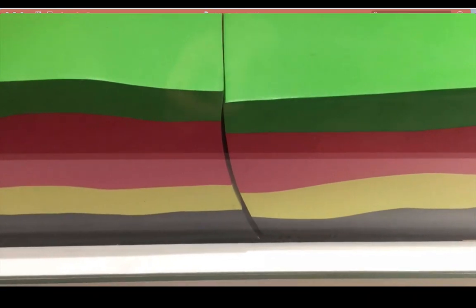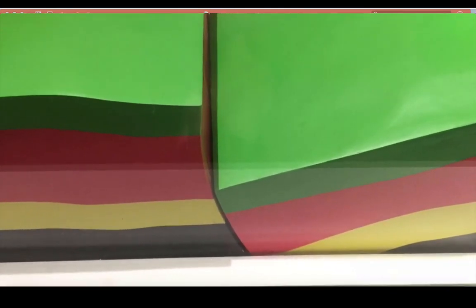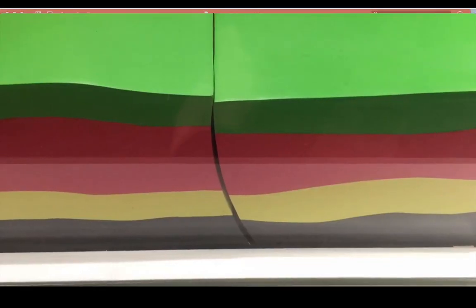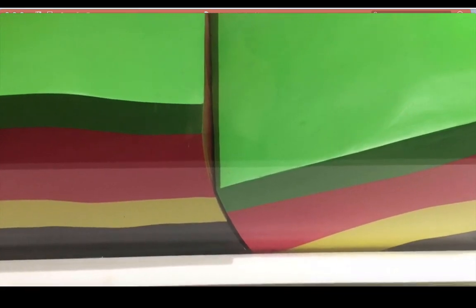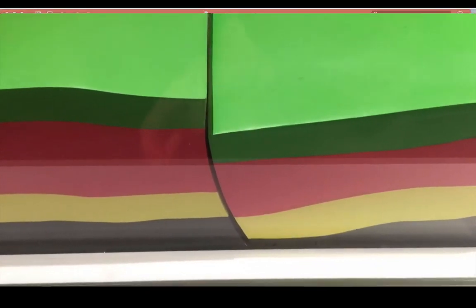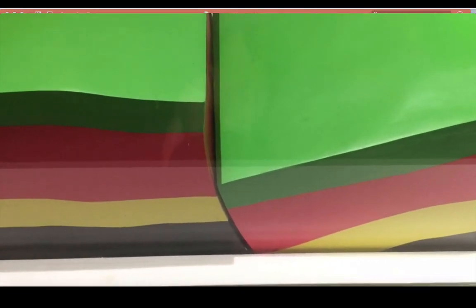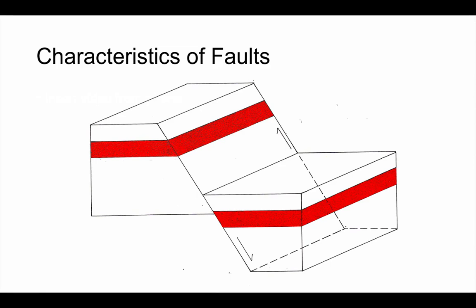If we start by thinking what a fault is, this short video shows us a representation of a fault moving. A fault is a break in the rock along which there's been movement, created by some kind of crustal stress. When a rock is broken and moved it can create a structure perhaps that looks a little like this block diagram.